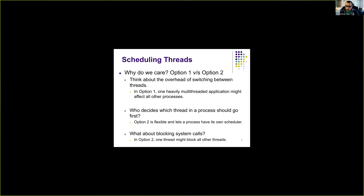What are the advantages and disadvantages of these two options? Think about the overhead of switching between threads. If we make the kernel aware of all threads, a heavily multi-threaded application with, say, 100 threads can affect all other processes that have only one thread. For instance, if one process has 100 threads and another has only one, the kernel sees 101 execution units and must switch between all 101 threads — so process two is unnecessarily penalized for the scheduling needed for process one.